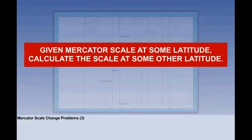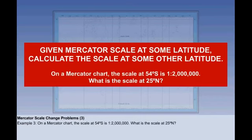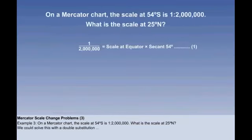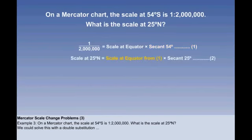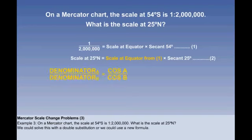The next type is: given Mercator scale at some latitude, calculate the scale at some other latitude. Example 3: on a Mercator chart, the scale at 54 south is 1 to 2 million. What is the scale at 25 north? We could solve this by combining the previous two methods — a double substitution. Knowing the scale at 54 south, we can find the scale at the equator, and then find the scale at 25 north. It would work, but there is a quicker way.